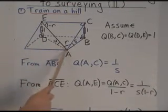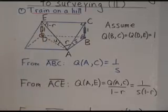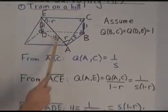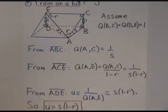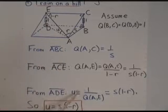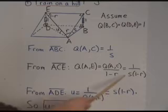And now finally in this right triangle ADE, we've just found that quadrants. The spread U, which we're after, is one over that quadrants we've just found. So U is equal to one over Q of AE. Substitute what we've just found, we get S times one minus R.